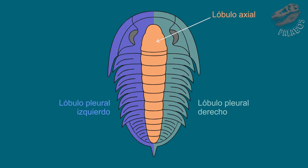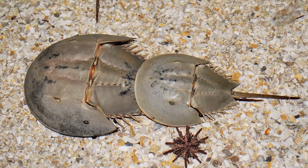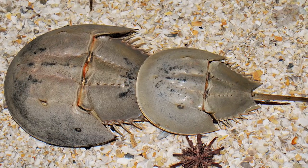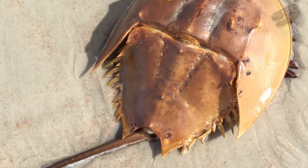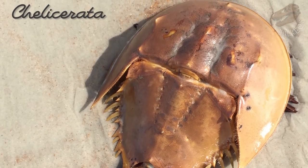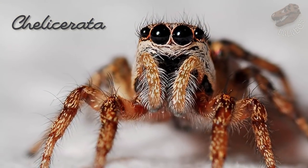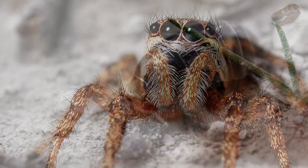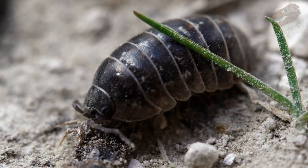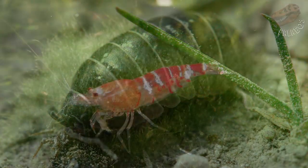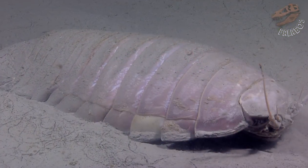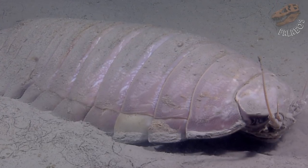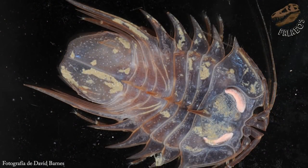A menudo se suele confundir a los trilobites con otros organismos. El cangrejo cacerola, que ni es un cangrejo ni una cacerola, se trata de un grupo de animales llamados cifosuros, parte del grupo llamado quelicerata, que contiene a las arañas, escorpiones y sus parientes. También se confunde con la cochinilla o bicho bolita, que son más cercanos a los camarones que a los trilobites, pues son crustáceos. Los marinos son confundidos más frecuentemente, especialmente los de la familia cerólide.